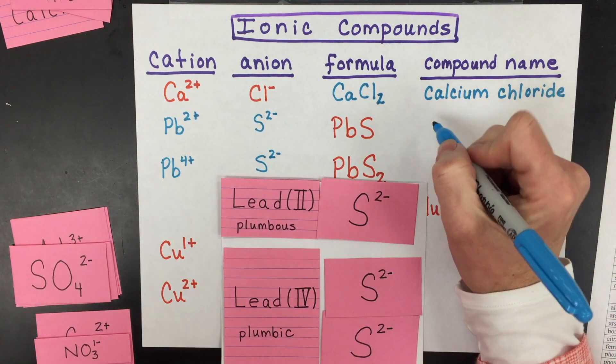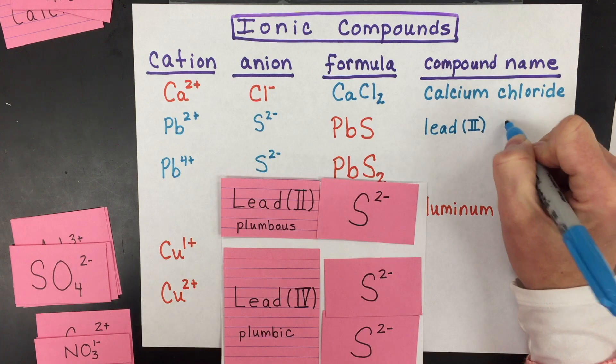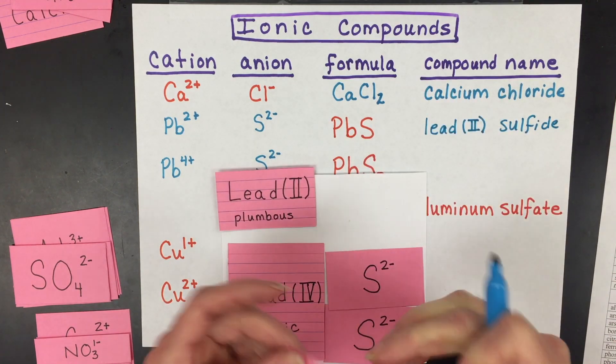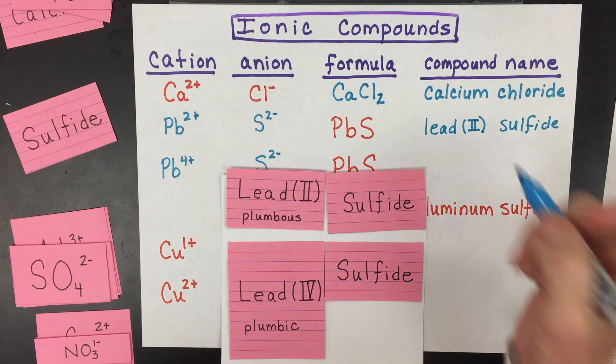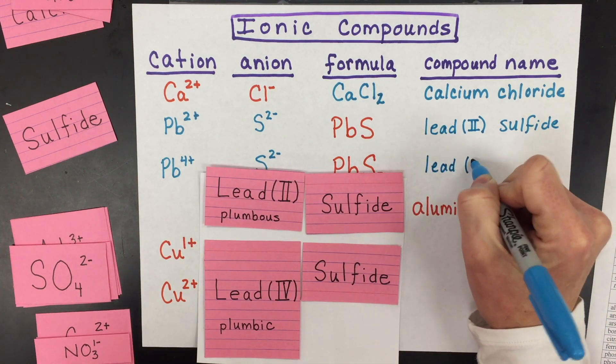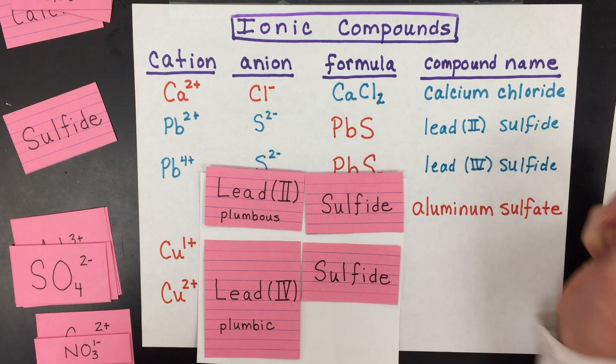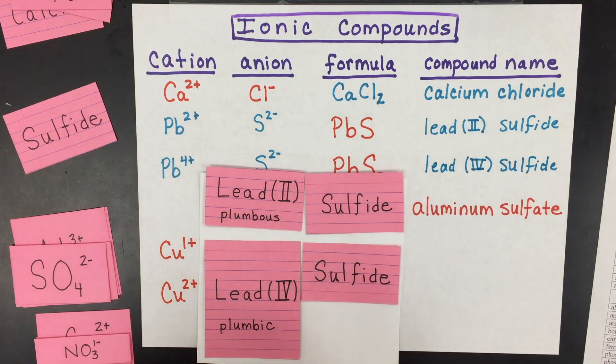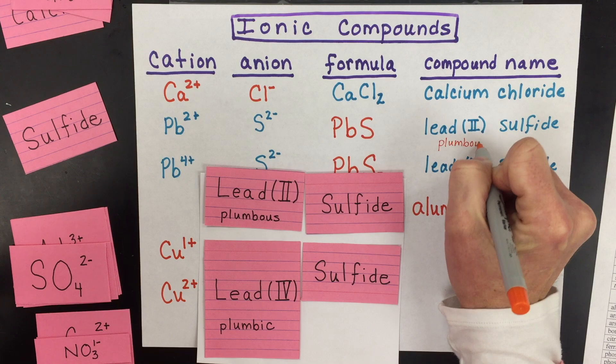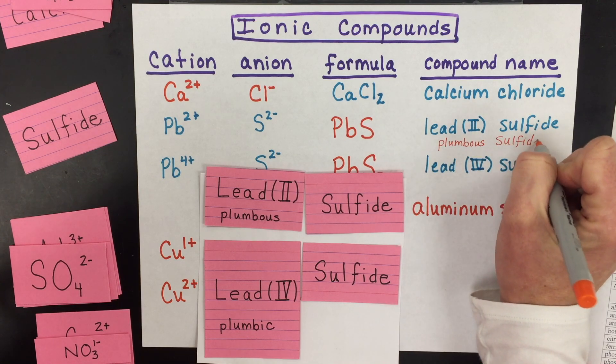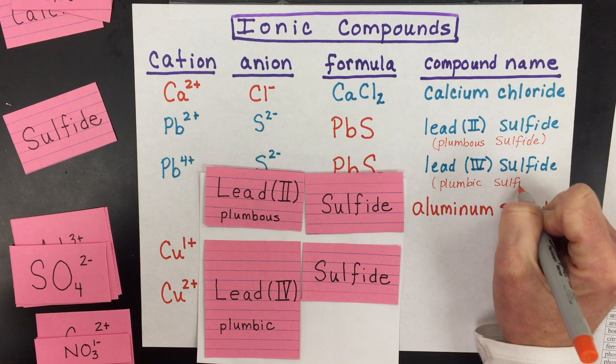So when we name them, we have to say which one we have. We have lead two in Roman numerals and then sulfide, or we need to say that we have lead and the Roman numeral for four sulfide. The other thing you can do is use those Latin names. You could call this plumbous sulfide, or you could call this one plumbic sulfide.